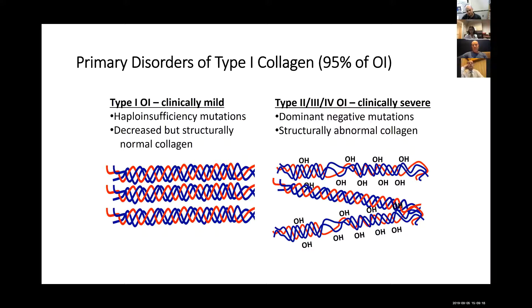In contrast, individuals with the more severe forms of OI typically have missense mutations. These are dominant negative mutations because the protein gets made and incorporated into the type 1 collagen triple helical structure. However, because of the mutation, a significant portion of the collagen molecules are structurally abnormal, leading to over-modification as seen with the hydroxy groups shown there. These types of OI are referred to as qualitative defects in type 1 collagen, as opposed to quantitative defects typical of the mildest type 1 OI. These primary disorders of type 1 collagen account for 95% of individuals with OI.